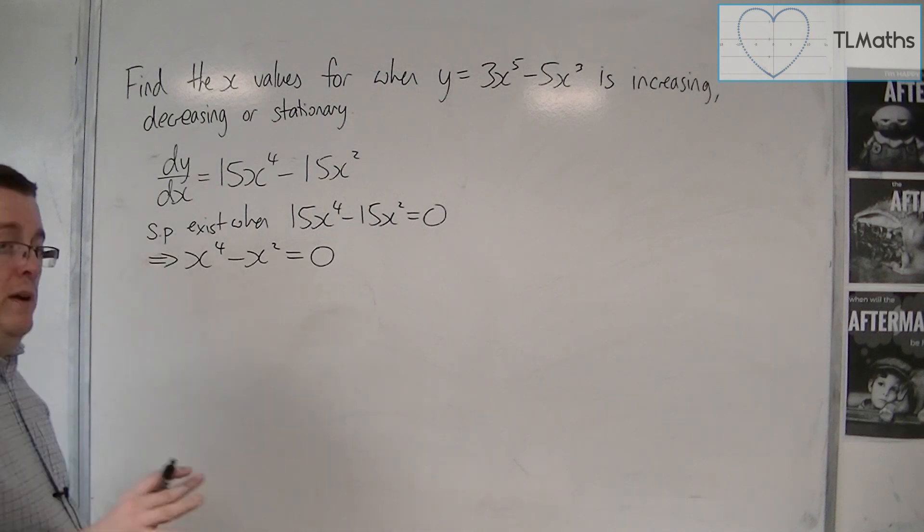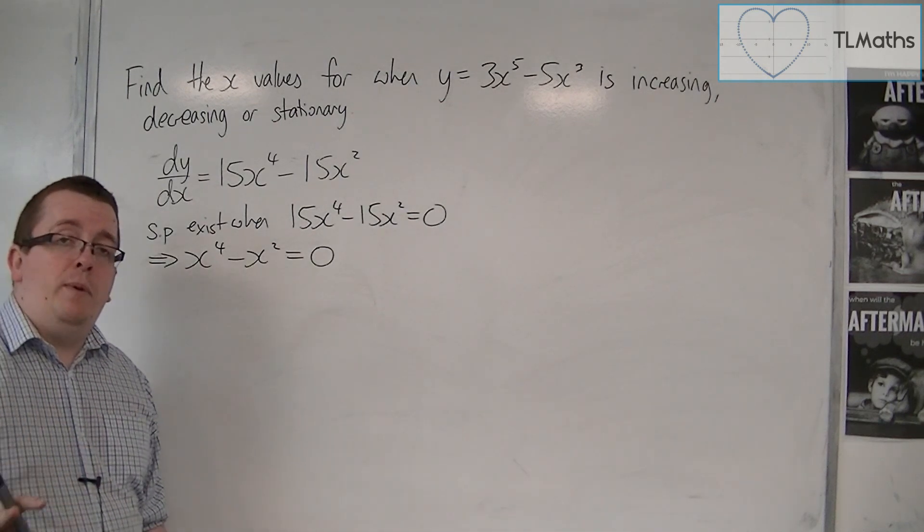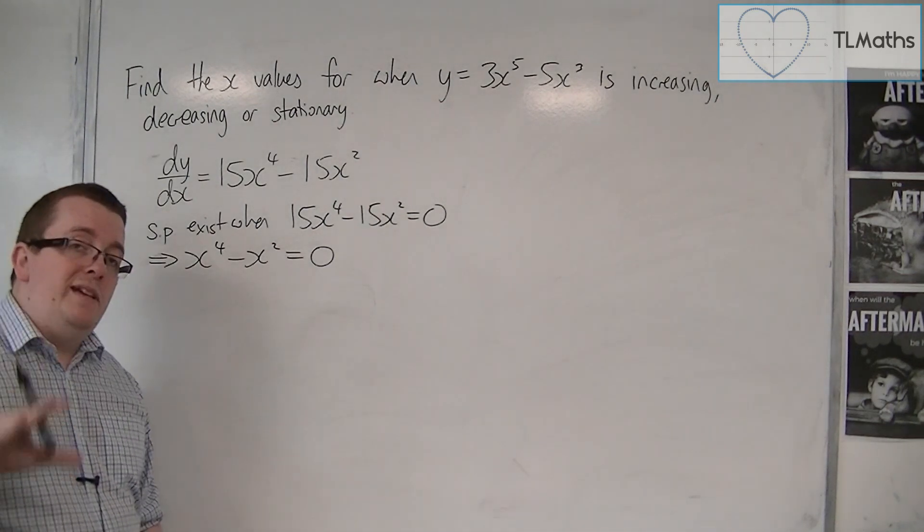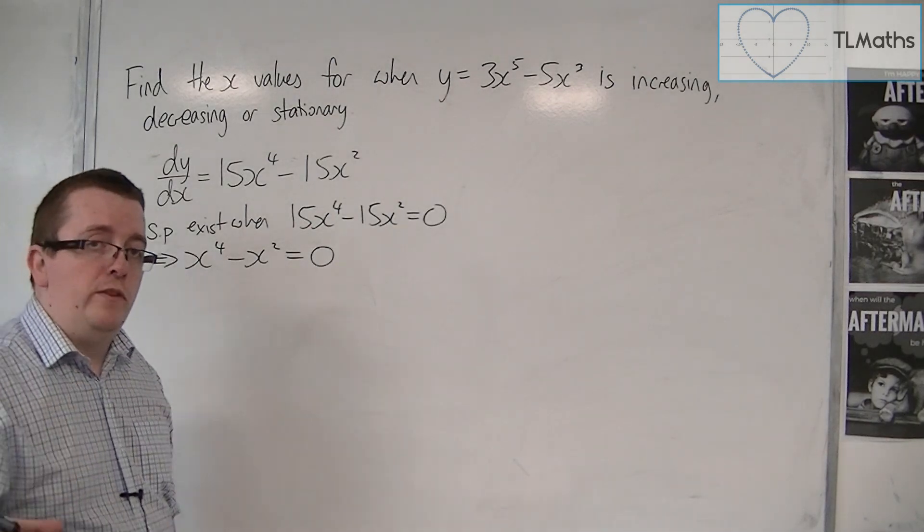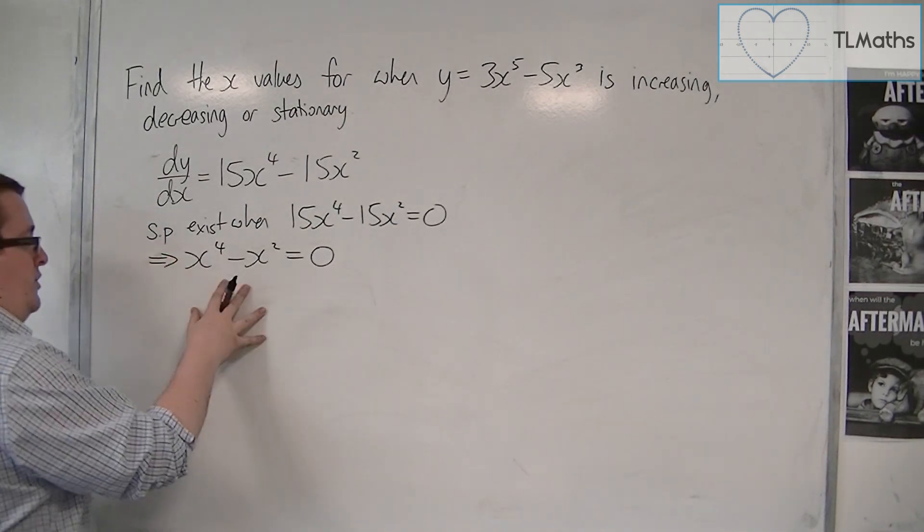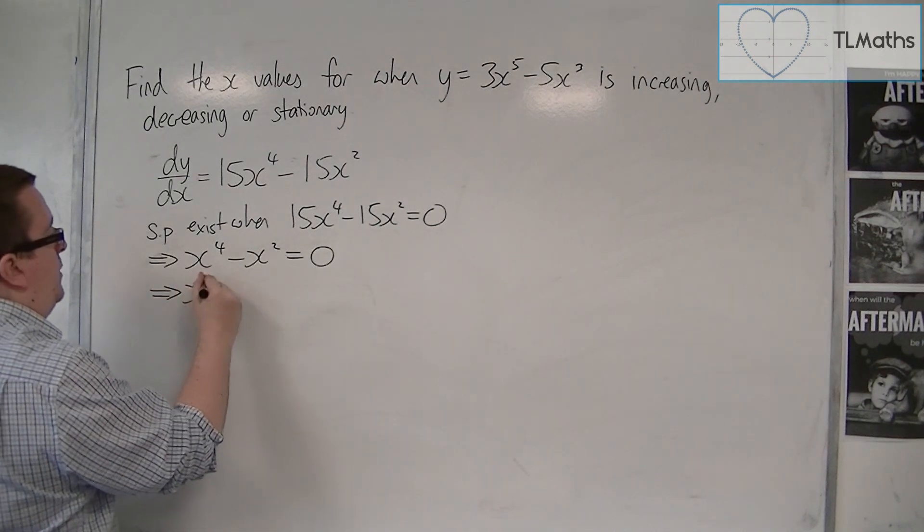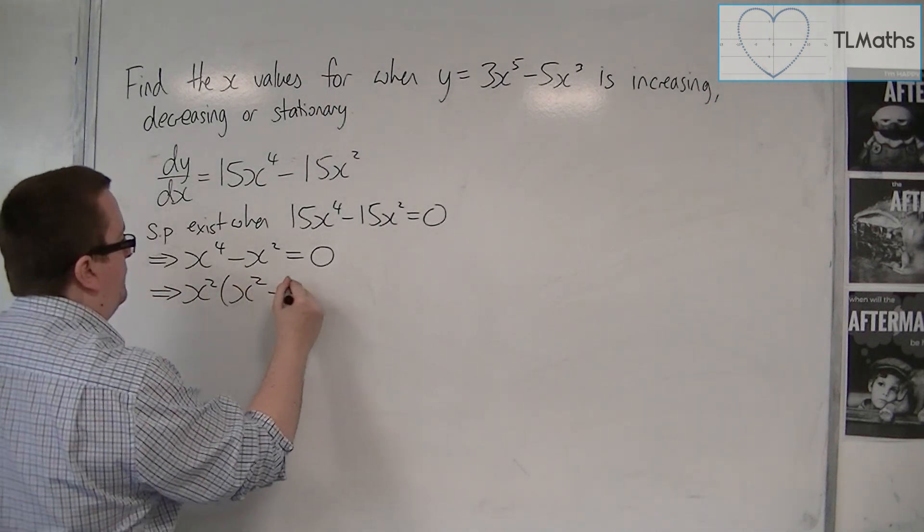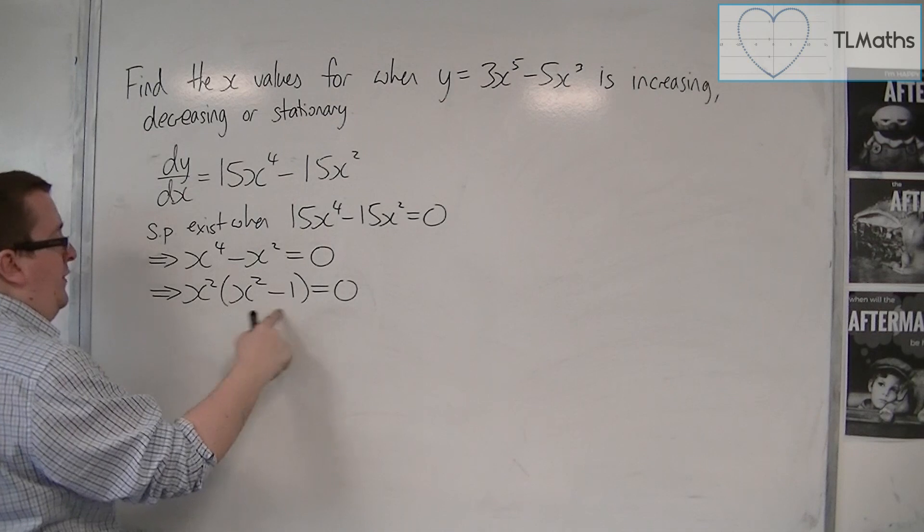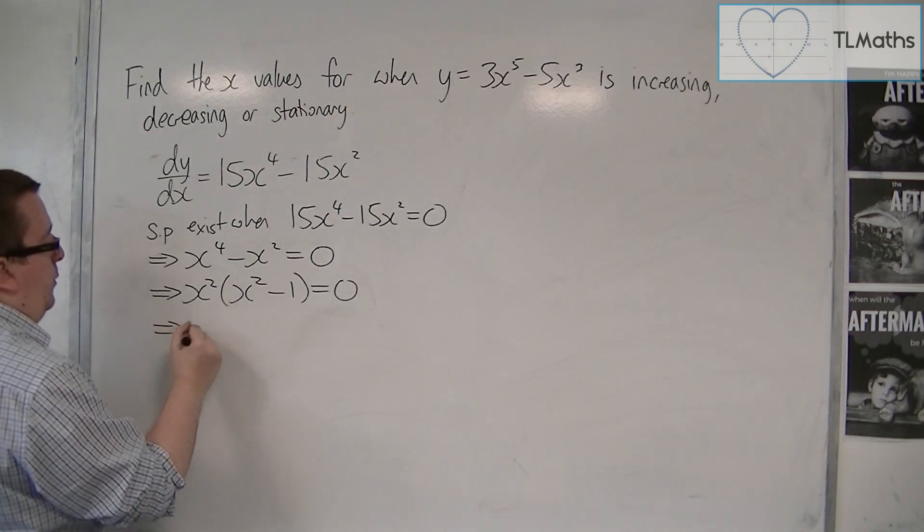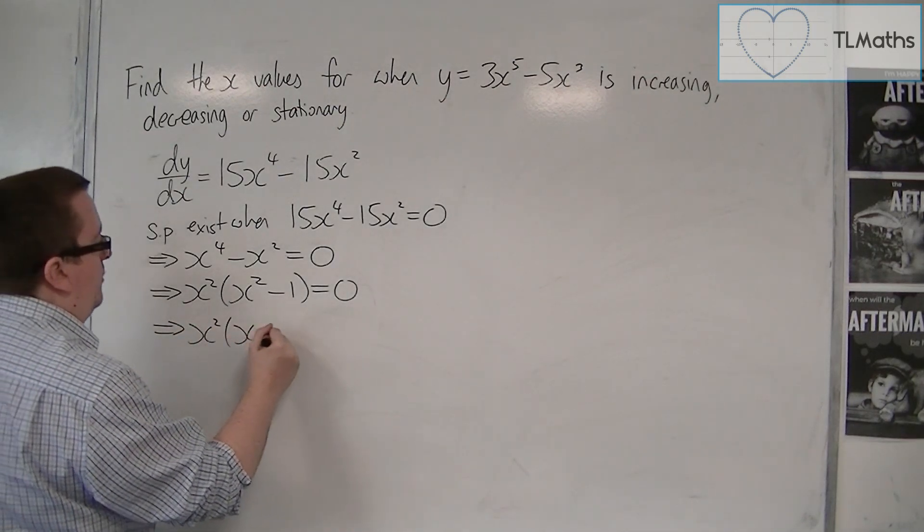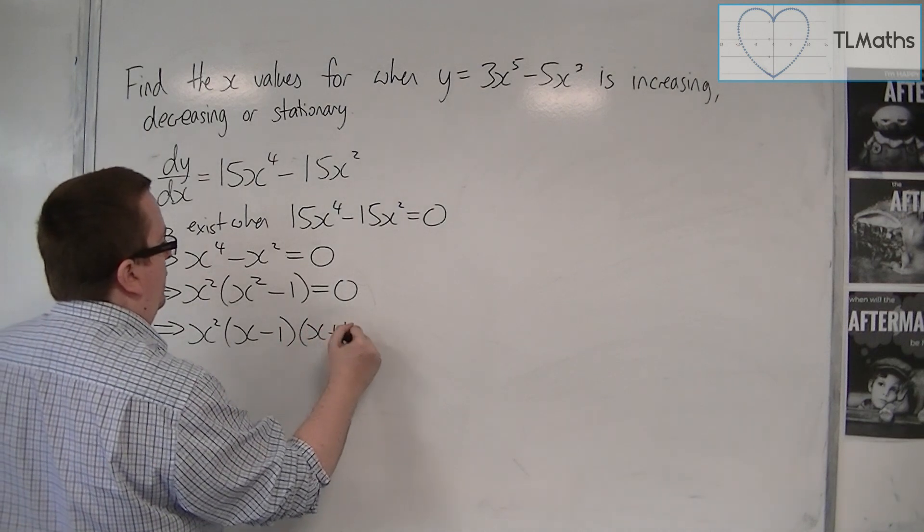Now I must stop myself from trying to divide by x squared. Remember, doing that will lose you solutions. So you want to factorise this instead. Factorise it into a single bracket first. And then that is the difference of two squares. So we'll have x squared, x minus 1, x plus 1.